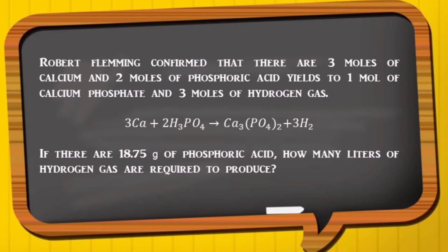Robert Fleming confirmed that there are 3 moles of calcium and 2 moles of phosphoric acid yields to 1 mole of calcium phosphate and 3 moles of hydrogen gas. If there are 18.75 grams of phosphoric acid, how many liters of hydrogen gas are required to produce?